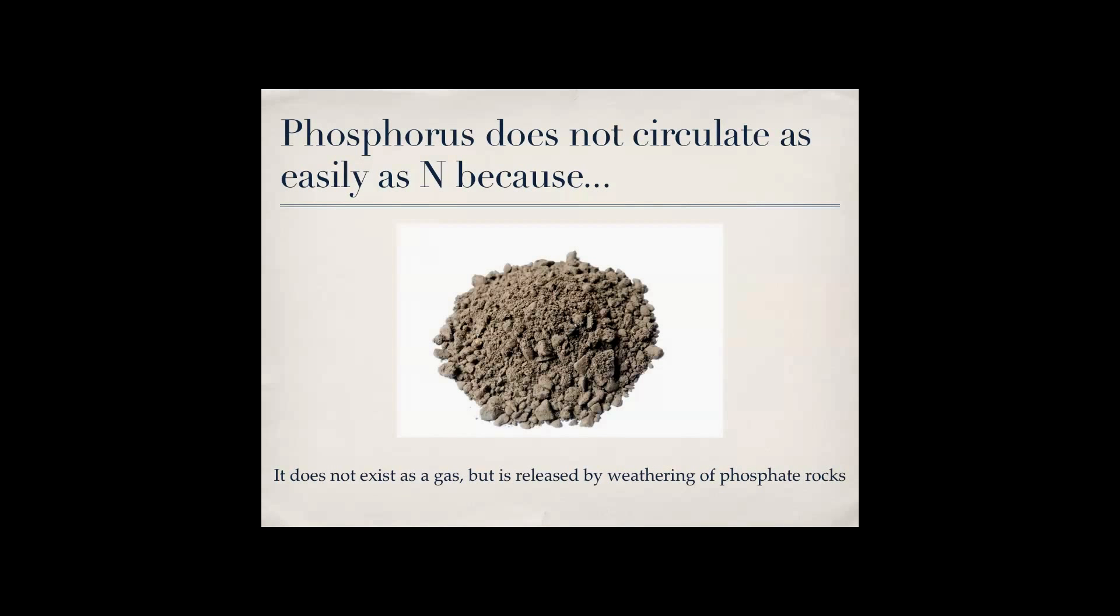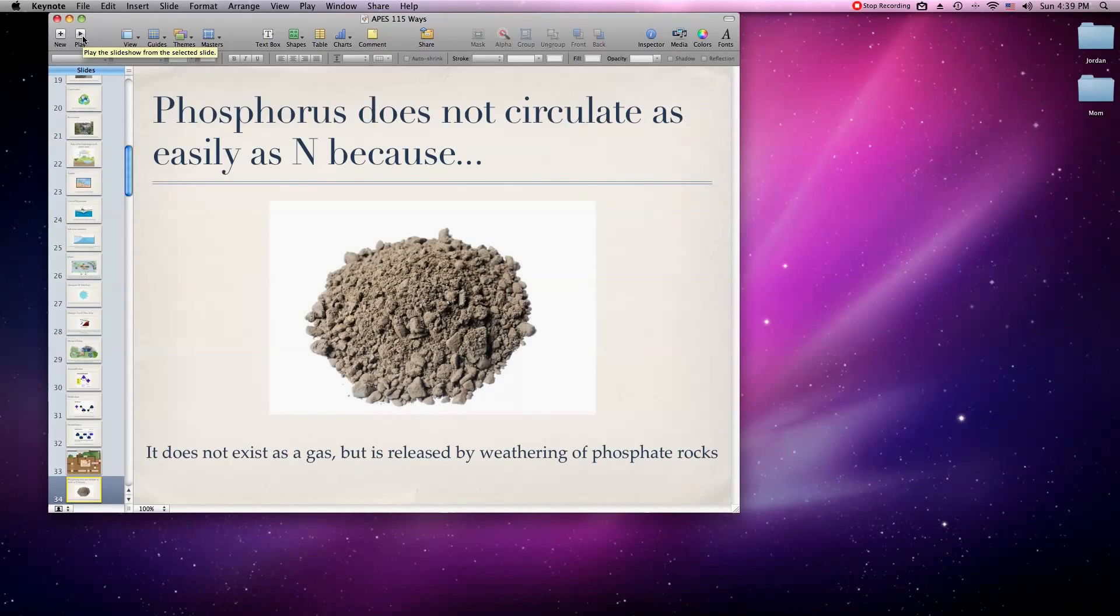Phosphorus does not circulate as easily as nitrogen because it does not exist as a gas but is released by the weathering of phosphate rocks. I'm gonna take a break here, but in the next video I'll continue. So I'll see you next time.